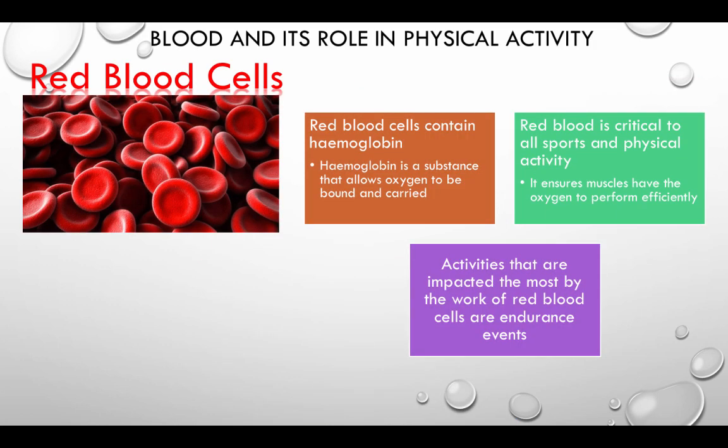Blood and its role in physical activity. Red blood cells contain haemoglobin, a substance that allows oxygen to be bound and carried. Red blood cells are crucial to all sports and physical activities, ensuring muscles have the oxygen to perform efficiently. Activities impacted the most by the work of red blood cells are endurance events.